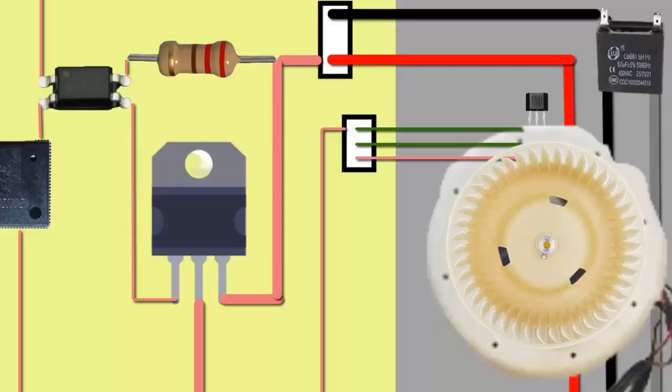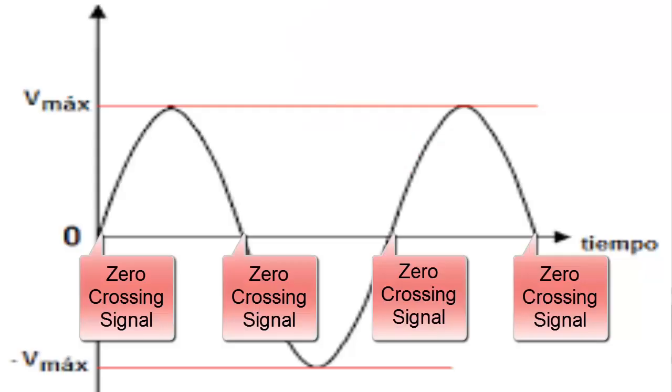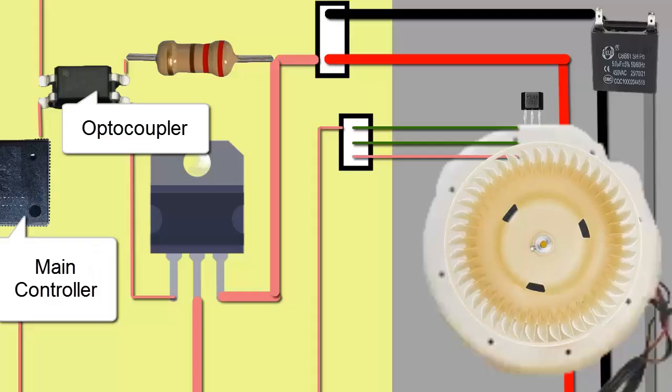However, the main controller requires two signals to control the new fan speed: the current speed, and the zero-crossing signal from the voltage curve coming from the electrical grid, which is extracted through an electronic circuit on the board.